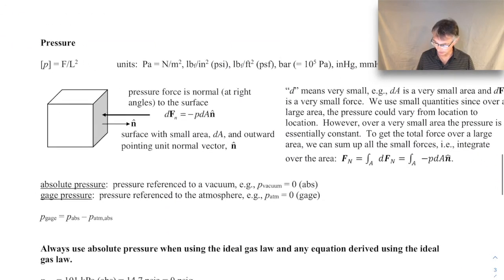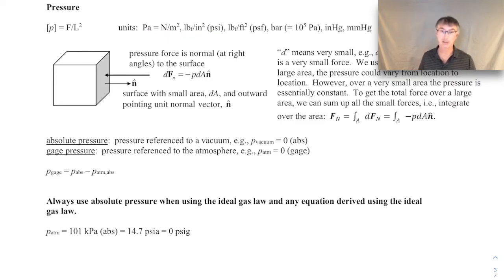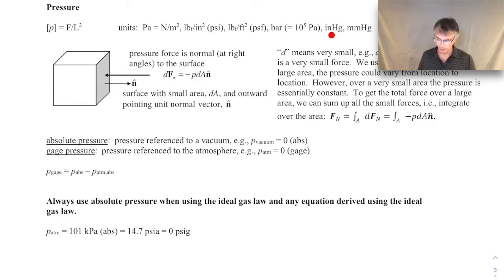Pressure is a force per unit area. The dimensions of pressure — we'll use P — are force per unit area, where area is length squared. Common units are pascals, which are newtons per square meter. In the English system it's pounds force per square inch (psi) or pounds force per square foot (psf). Another unit we'll use frequently is bars — one bar equals 100,000 pascals. We'll primarily use pascals, kilopascals, and bars, and will stick with metric units most of the time.